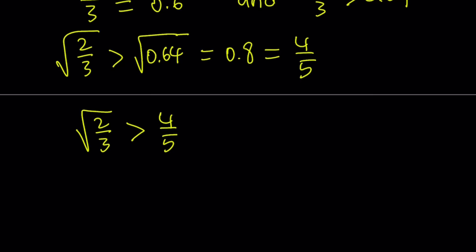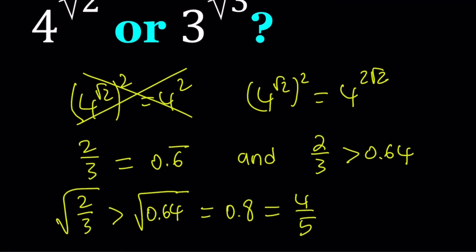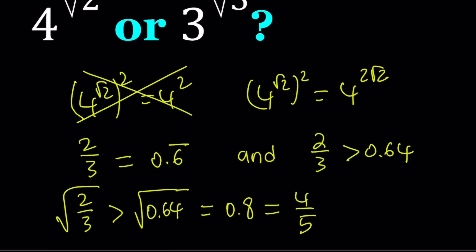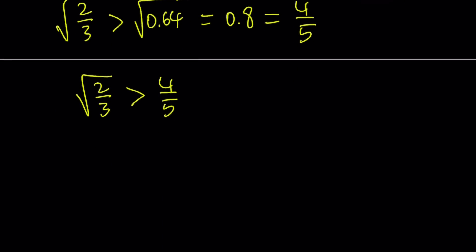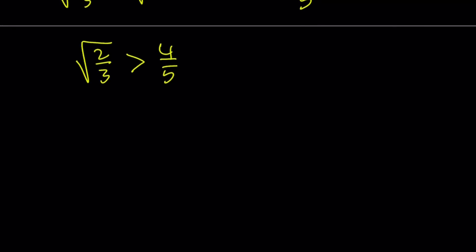How can I use this relationship? We are trying to compare 4 to the power root 2 with another number, so 2 thirds is going to be helpful if I use it with base 4. Therefore, 4 to the power square root of 2 thirds is going to be greater than 4 to the power 4 fifths — because square root of 2 thirds is the larger exponent, and since 4 is greater than 1, this is true.